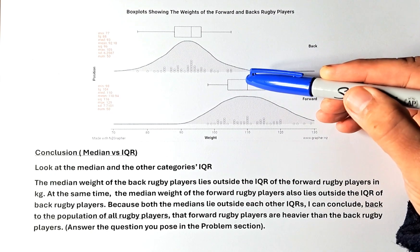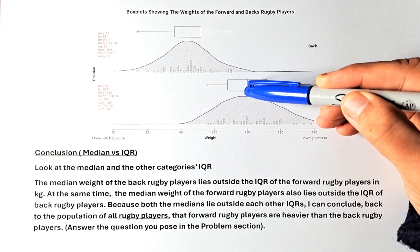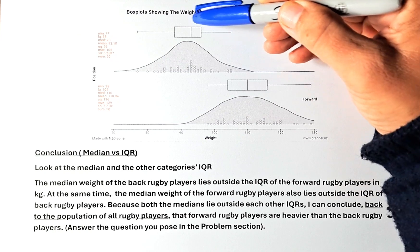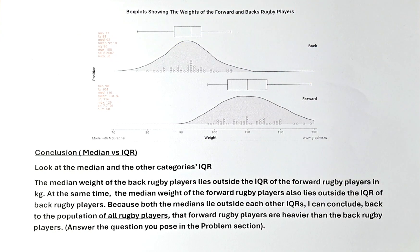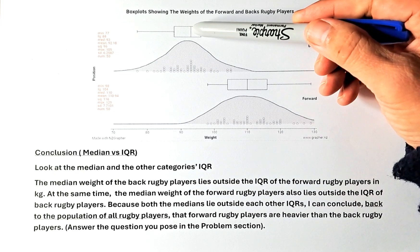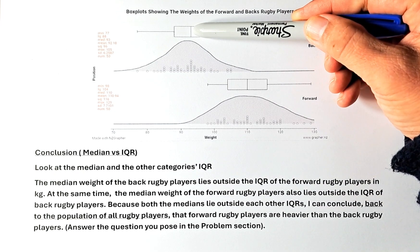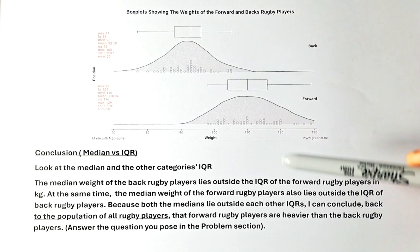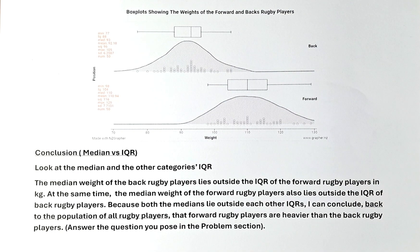At the same time, the median of the forward, if you go up, will be outside the IQR of the back. So this is how we answer this question: the median weight of the back rugby player lies outside the IQR of the forward rugby player in kilograms.